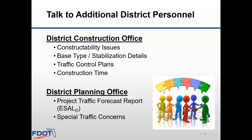The next step in your project coordination efforts should be to talk to your district personnel. The District Construction Office should be involved to determine if there is specific information needed in the plans, such as special construction details or constructability issues, including base type, stabilization, temporary traffic control plans, and construction time. The District Planning Office will provide current and future traffic data including projected ESLs, and will also be aware of any planned developments during the design life of the facility — such as a shopping mall or movie theater — that would generate more trips in the future.